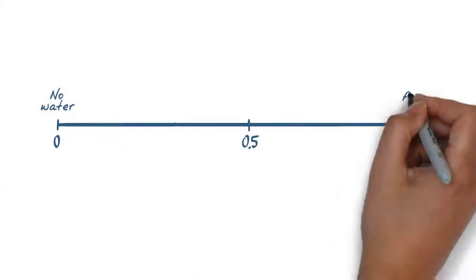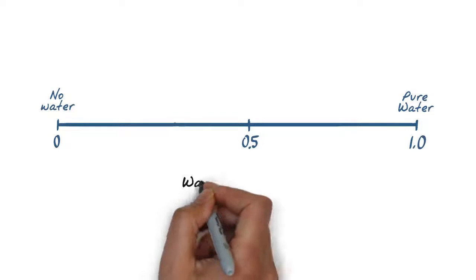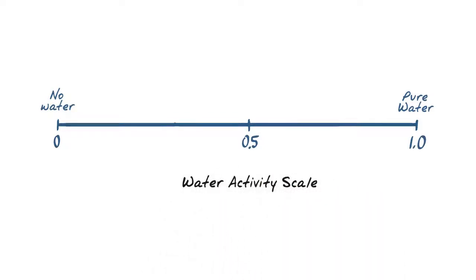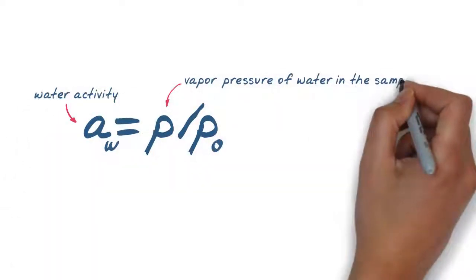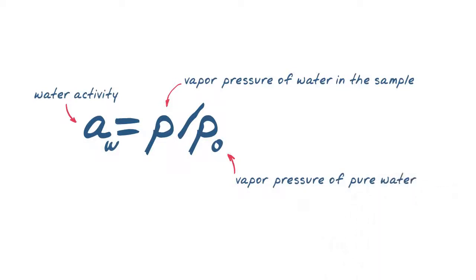Water activity is based on a scale of 0 to 1.0, with pure water having a value of 1.00. It is defined as the vapor pressure of water over a sample divided by the vapor pressure of pure water at the same temperature.